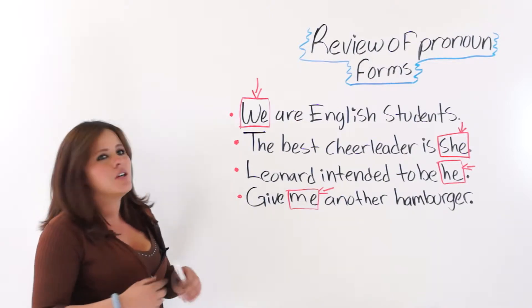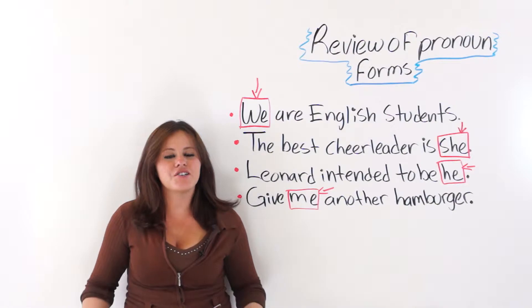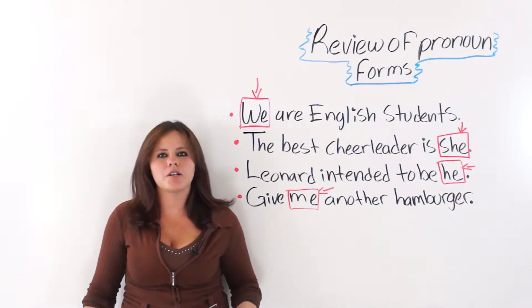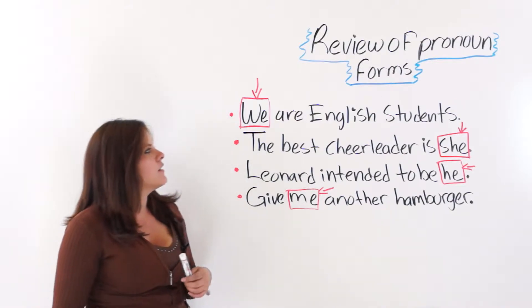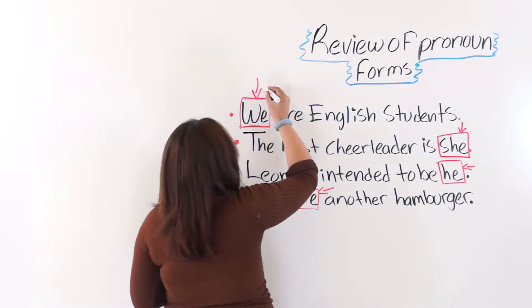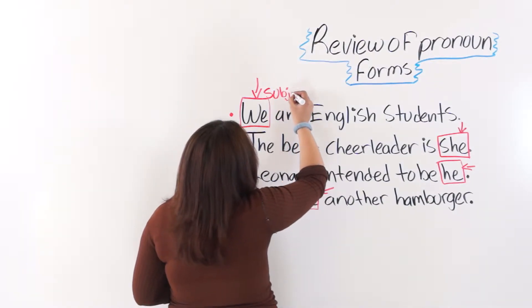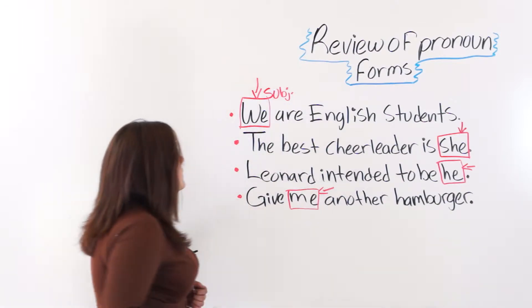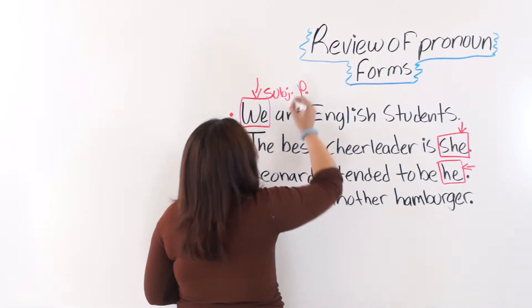So that tells you that we, this personal pronoun here, is acting as the subject of the sentence, as the subject of the verb. We are English students. So this is acting as a subjective pronoun, or subject pronoun.